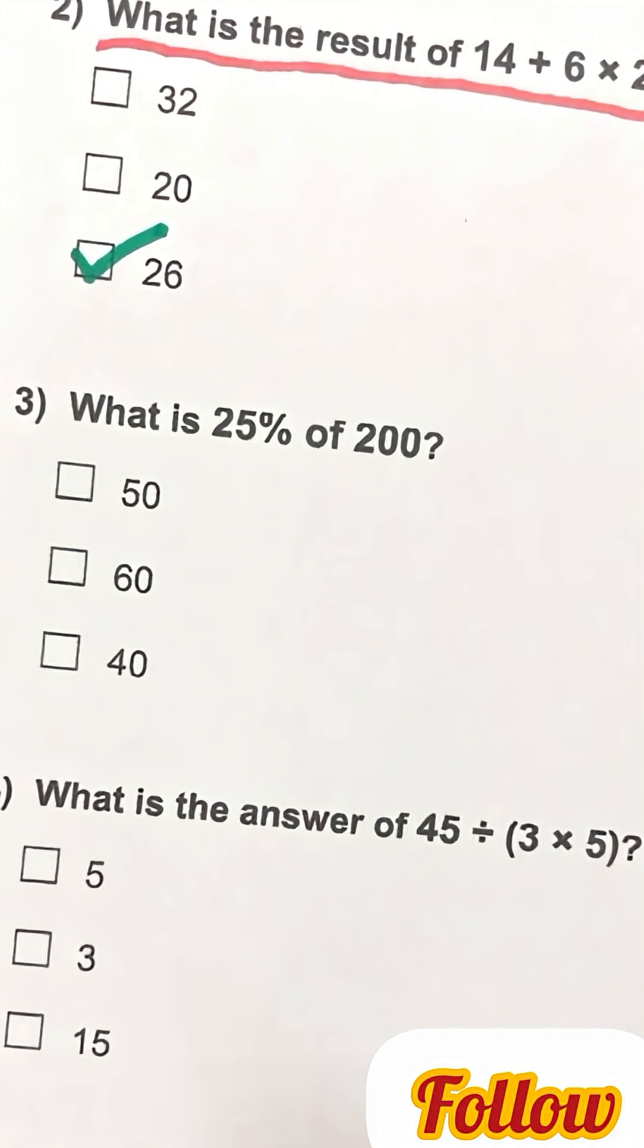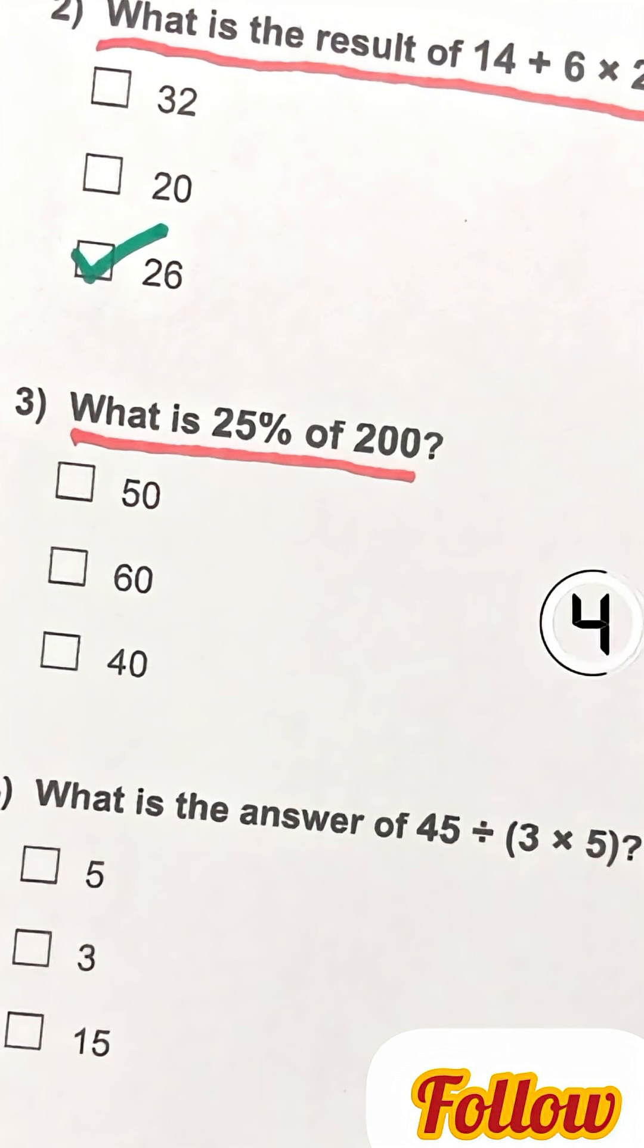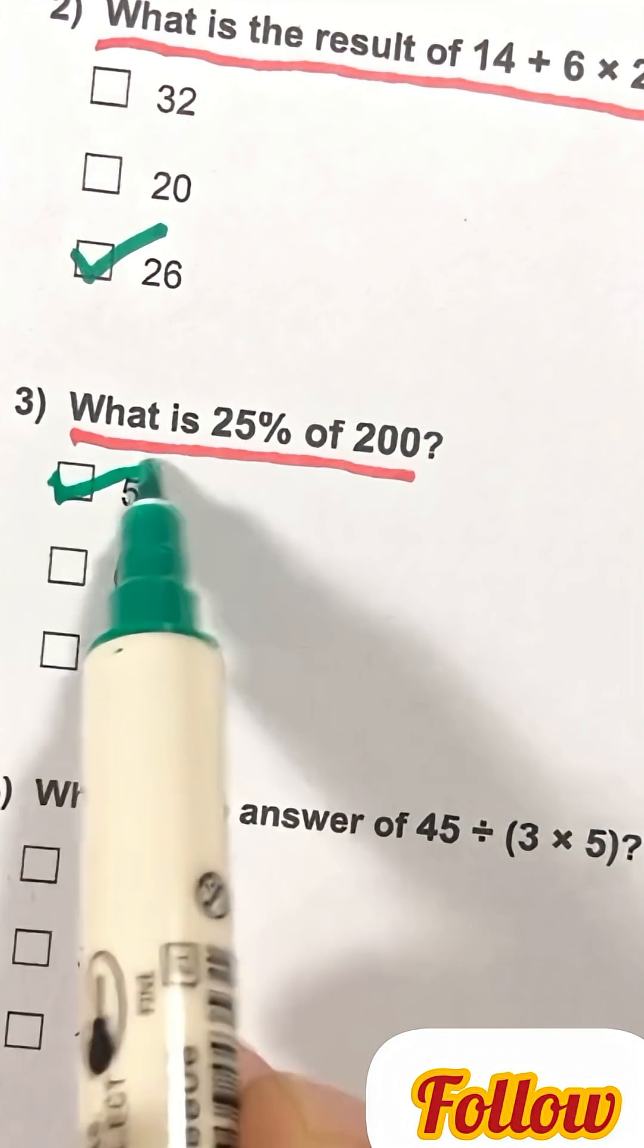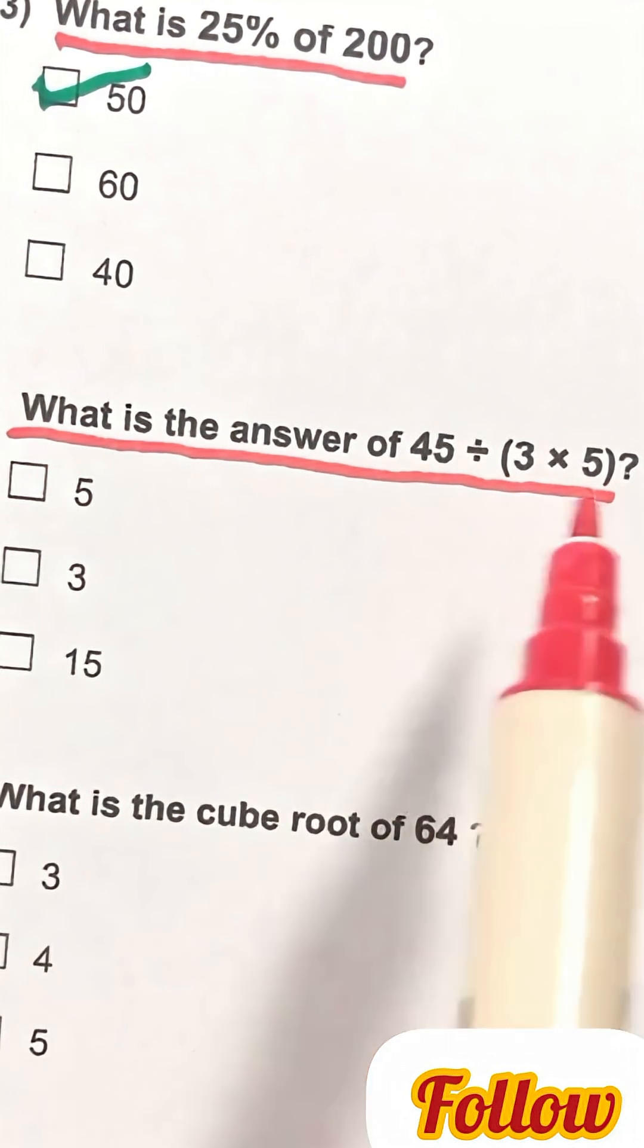Question 3. What is 25% of 200? 50. Question 4. What is the answer of 45 divide 3 times 5? 3.